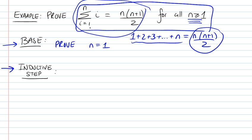Because when n takes the value of 1, this sum becomes 1. And on this side, we have 1 times 1 plus 1 divided by 2, and that's 2 divided by 2 equals 1. So this holds. The left-hand side is equal to the right-hand side for the base case, so we're done with the first case.